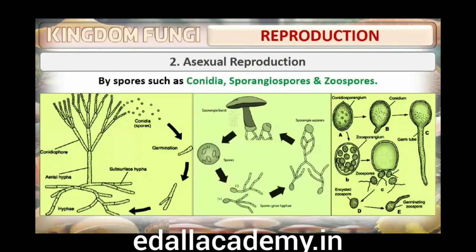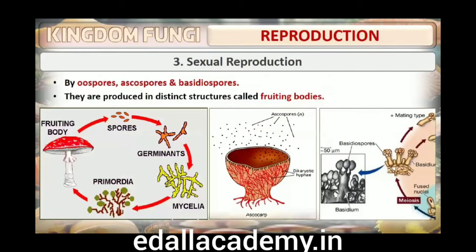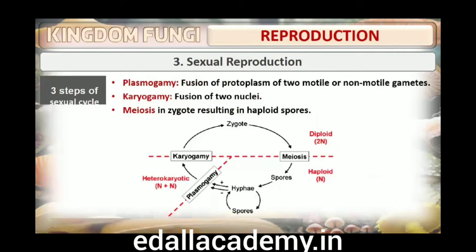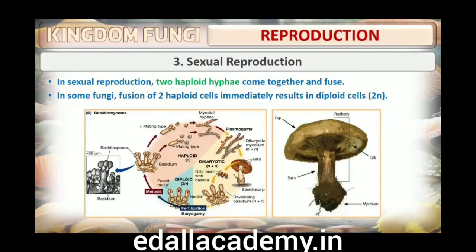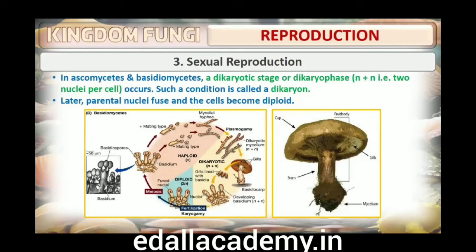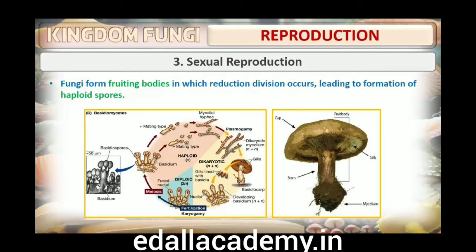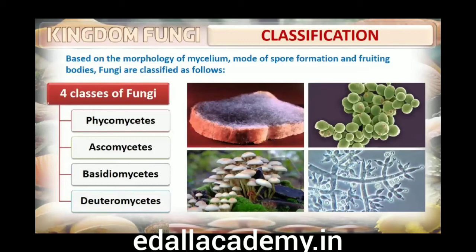The sexual cycle in fungi involves three steps: (1) fusion of protoplasms between two motile or non-motile gametes called plasmogamy; (2) fusion of two nuclei called karyogamy; (3) meiosis in zygote resulting in haploid spores. When a fungus reproduces sexually, two haploid hyphae of compatible mating types come together and fuse. In some fungi this immediately results in diploid cells (2N). However, in ascomycetes and basidiomycetes, an intervening dikaryotic stage (N+N, two nuclei per cell) occurs — this condition is called a dikaryon and the phase is called dikaryophase. Later, the parental nuclei fuse and cells become diploid. The fungi form fruiting bodies in which reduction division occurs, leading to formation of haploid spores. The morphology of the mycelium, mode of spore formation and fruiting bodies form the basis for division of the kingdom into various classes.